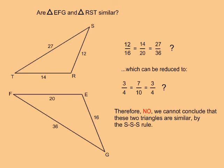This means that the three sets of sides are not proportional. And no, we cannot conclude that these two triangles are similar by the SSS rule.